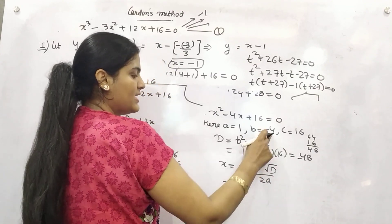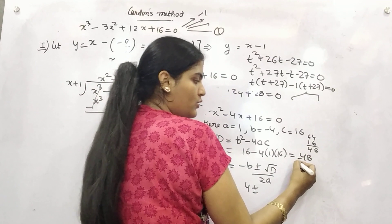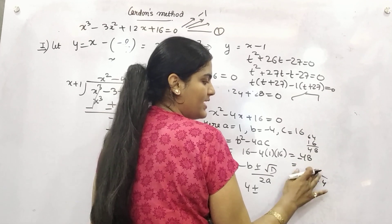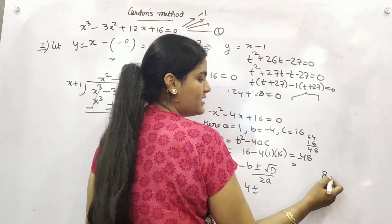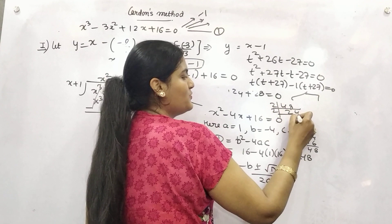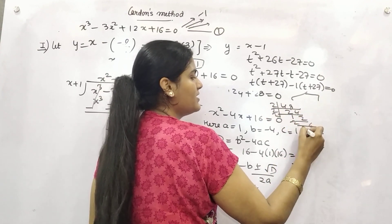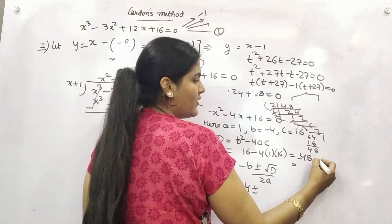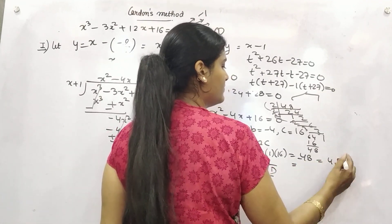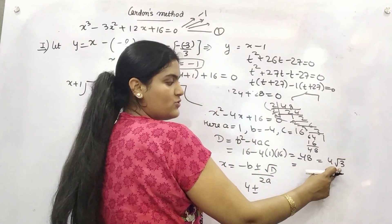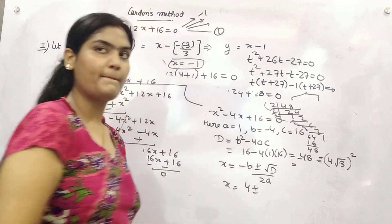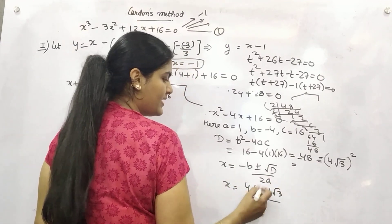So x is equal to minus b plus minus root d by 2a. So minus b means minus minus plus 4 plus minus root d. You know, it is 12 times 4. And you can write it as 8 times 6. Let's do 2 to the 4, 2 for the 8, 2 to 12, 2 to 6, 2 to 3, 3 times 1. So you can write it as 4 root 6. 4 root 3. root 3 square is 3. 4 square is 16. 16, 3 is 48.